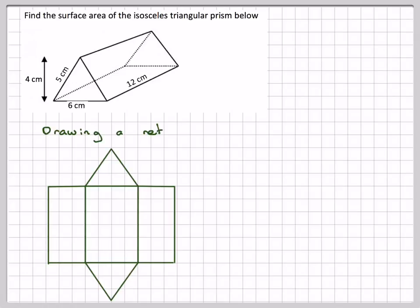Marking on some lengths. This length here is 12, this length here is 5. Now isosceles means that this side here will be the same as this side here. So this is 5 and this is 5.